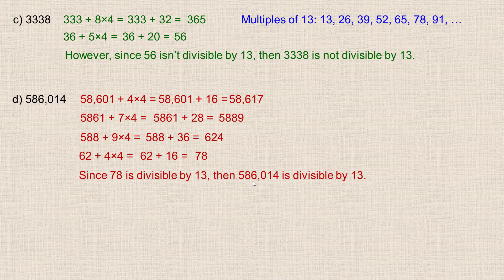So you take the number in the ones digit, multiply it by 4, and add it to the rest of the digits, and keep going down until you see that the final number is a multiple of 13 or not to determine whether the original number is divisible by 13 or not. And that's the end of the tutorial.